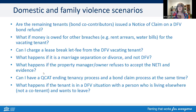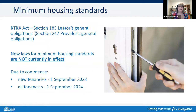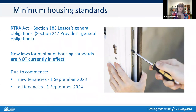Let's move to the next session: minimum housing standards. Section 185 covers the lessor's general obligations — the owner must ensure the premises are clean, fit to live in, and not in breach of any health or safety laws, and while the tenancy continues they must carry out repairs and maintenance. For rooming accommodation it's section 247 outlining the provider's general obligations. The minimum housing standards are not currently in effect — time has been given for property owners to be compliant. They are due to commence from 1 September 2023 for all new tenancies, and then for all other tenancies it will be 1 September 2024.